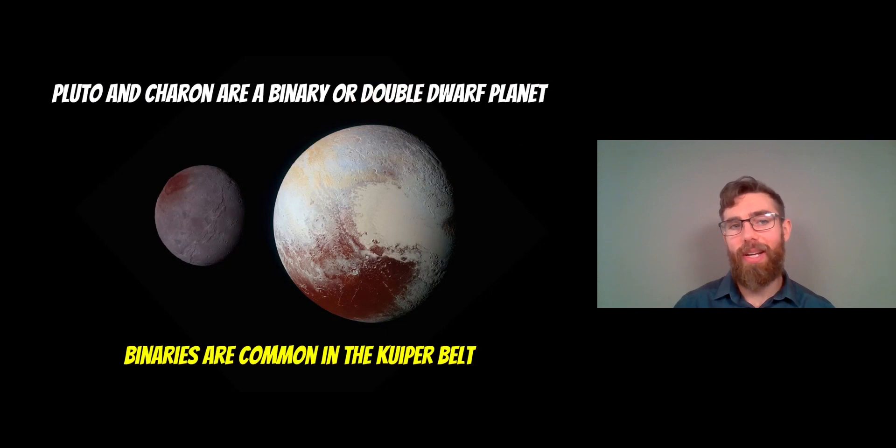So Pluto and its moon are technically a binary or double dwarf planet. The reason for that is, although its moon is smaller than Pluto, they are quite similar in size compared to a normal planet-moon system, although this is a dwarf planet. So they orbit a common centre of mass, as opposed to the moon appearing to go round.